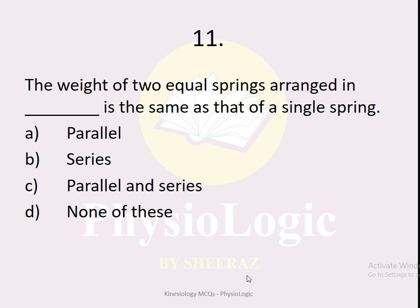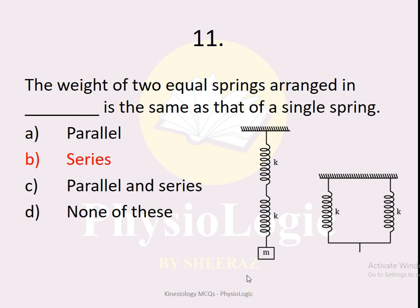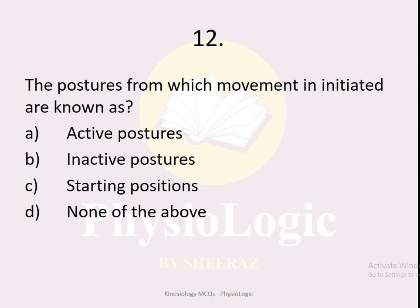MCQ number eleven: the weight of two equal springs arranged in dash is the same as that of a single spring — parallel, series, parallel in series, or none? The correct option is series. When two equal springs are arranged in series, their combined weight equals that of a single spring. If two springs each have 5 N force arranged in series, the overall force is still 5 N. But in parallel combination, the forces add up — 5 N + 5 N = 10 N.